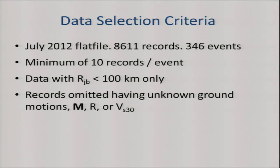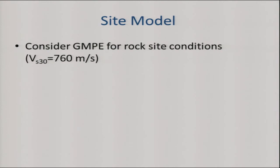For developing our model, we operated off a July version of the flat file — without the small magnitude events yet — which had 8,600 records and 346 earthquakes. We applied criteria: a minimum of 10 records per event to define event terms well, only close-in recordings to avoid attenuation problems at large distance, and we omitted records where we didn't know all the needed information.